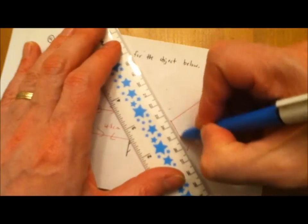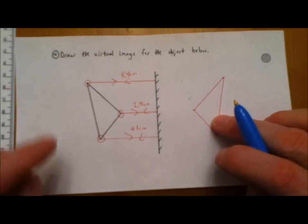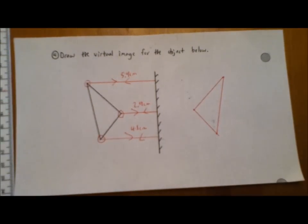And what you end up with is an image of an object on the other side of the mirror that just happens to be reversed. Just like your left becomes your right and your right becomes your left when you're looking in your own mirror.